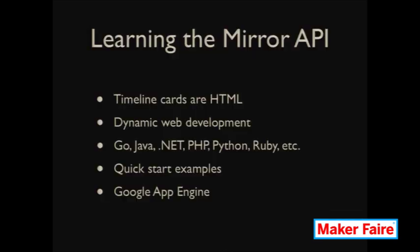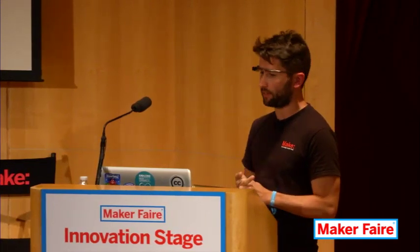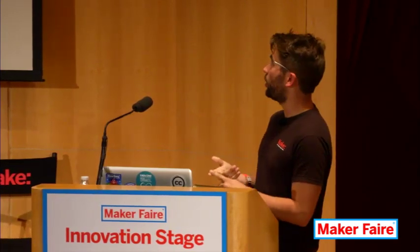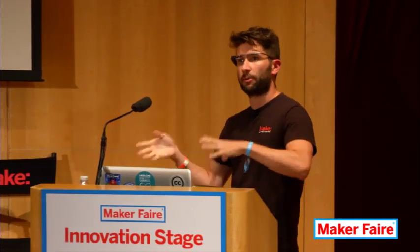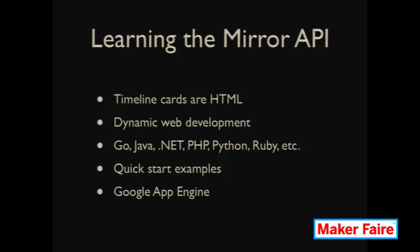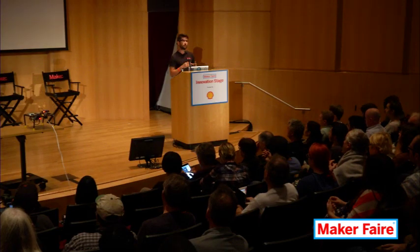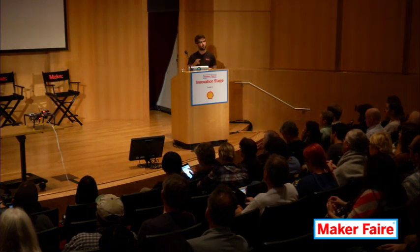If this is something you want to work with, there are a few things you need to learn. You need to learn a little bit about HTML and CSS because all these timeline cards are built in HTML and CSS — you're using all web technologies and dynamic web technologies. You'll also want to learn languages like Go, Java, .NET, Python, PHP, or Ruby. These are all dynamic web development languages you can use to work with the Mirror API, and they're listed in particular because there are quickstart examples for each of these languages on the Mirror API development site. They've got essentially built-out projects with these languages that you can change and modify, with step-by-step guides so you can launch your own application.